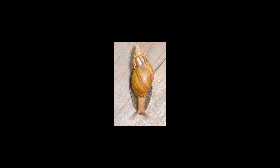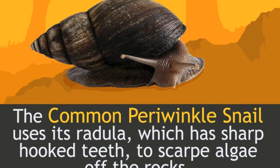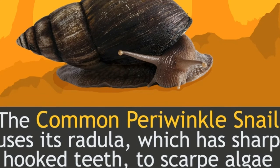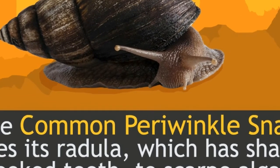How to identify them: The common periwinkle is one of the largest periwinkle snails, and its shell can grow to a height of about 52 mm. It has a spiral shell which is usually about 2 cm long and is solid enough to withstand turbulent waves. The young common periwinkle snail has ridges on its shell, while the adult common periwinkles have a shell that is smooth.